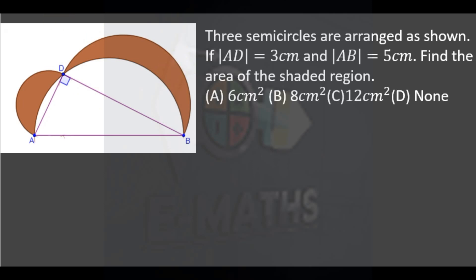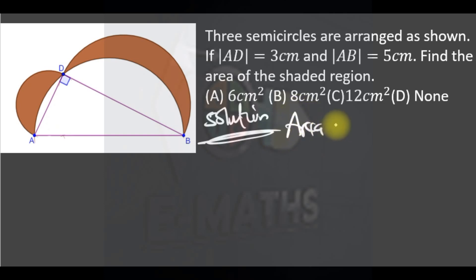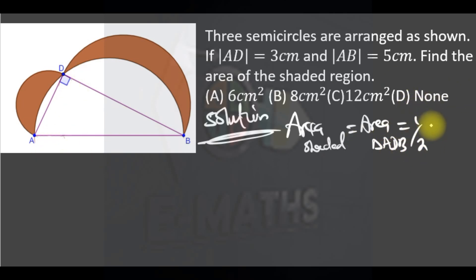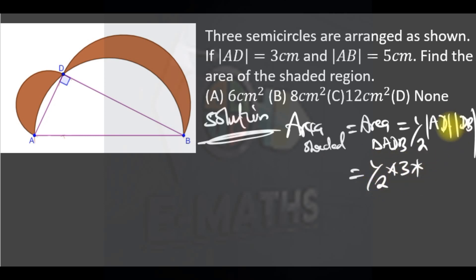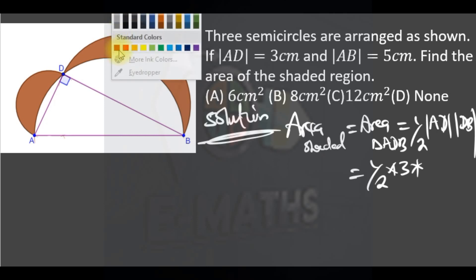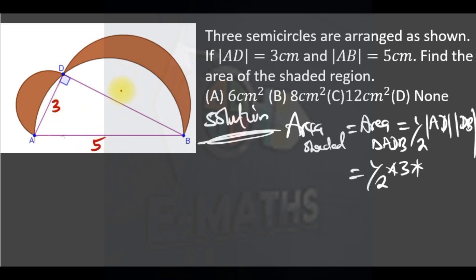The shaded area is equal to the area of triangle ADB, which is half AD times DB — half the product of the legs. Since it's a right angle triangle, using the Pythagorean theorem: AD is 3, AB is 5, so DB must be 4.